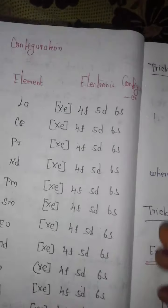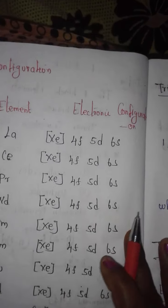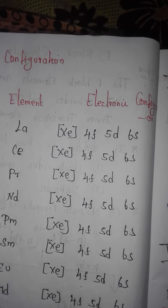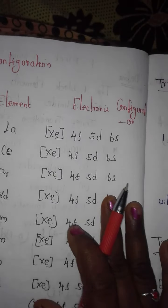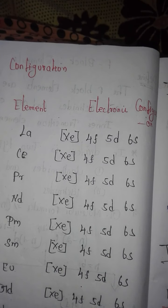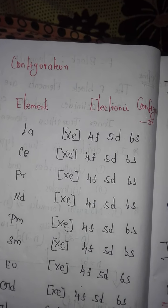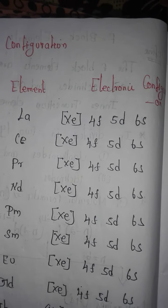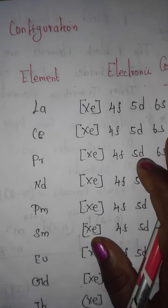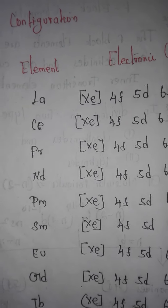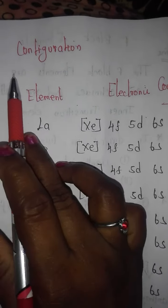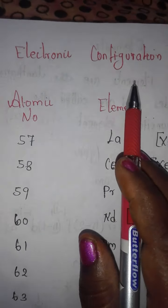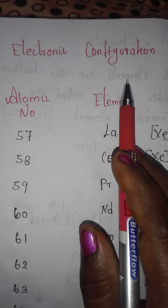Next, we look at some components: electronic configurations, oxidation states, and magnetic properties of f-block elements. We will particularly examine the lanthanides, and see the electronic configuration of all 15 lanthanide elements.